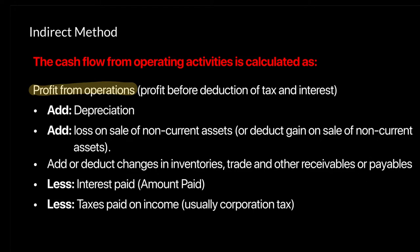We also need to adjust non-cash expenses like changes in inventory, trade and other receivables or payables — basically your working capital. Any changes in working capital need to be adjusted. There will be certain items included in the income statement that don't necessarily mean cash has been received — for example, sales and purchases. We also need to subtract interest paid and corporate tax paid, since those are cash outflows. Under the indirect method we use the income statement's operating profit and adjust it to find cash flow from operations.